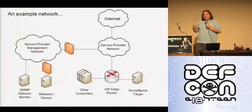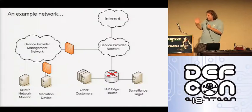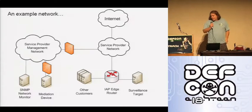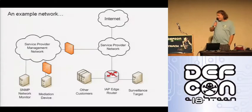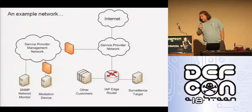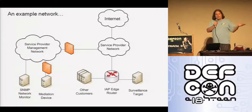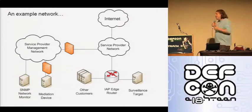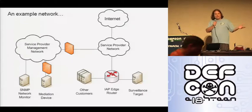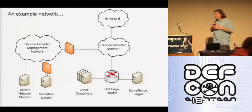There's a P edge router down here providing service to a bunch of customers, and one of those customers is the surveillance target. Somewhere within the ISP's cloud there's a service provider management network — this is how ISPs run their networks. They have SNMP monitoring servers and a bunch of other machines in that network that they use for running all of their gear.